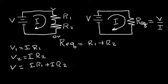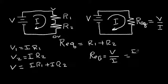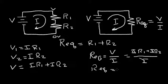Now on the right side, we said the equivalent R Eq is equal to V over I. So let's write that R equivalent is equal to V over I. I can substitute this expression for voltage from the left side and get IR1 plus IR2 divided by I. And lo and behold, the I's cancel, and I'm left with R equivalent is equal to R1 plus R2.